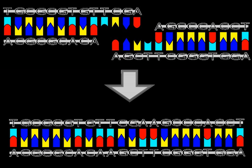Topoisomerase can be used instead of ligase for ligation, and the cloning may be done more rapidly without the need for restriction digest of the vector or insert. In this TOPO-cloning method, a linearized vector is activated by attaching topoisomerase I to its ends, and this TOPO-activated vector may then accept a PCR product by ligating to both of the 5' ends of the PCR product. The topoisomerase is released and a circular vector is formed in the process.